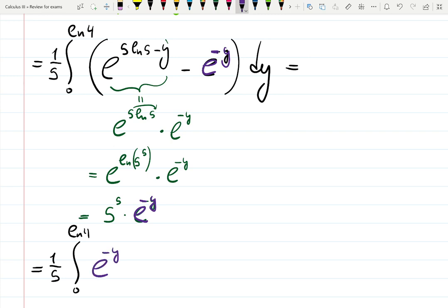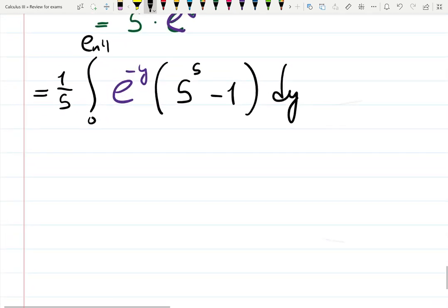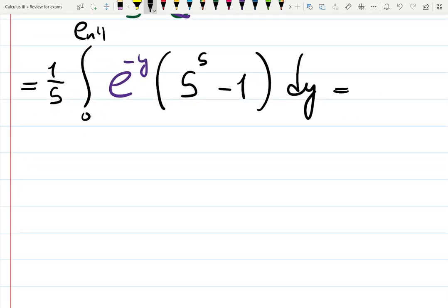One fifth integral from zero to ln 4, let's factor out this e to the minus y and e to the minus y. E to the minus y open parenthesis 5 to the 5 which is just a number minus 1 which is also just a normal number dy.